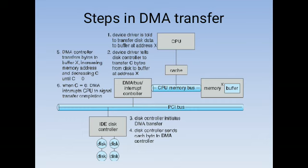Step 5: The DMA controller transfers bytes to buffer X, increasing the memory address and decreasing C until C equals 0. For example, if C starts at 10 bytes, it decreases to 9, 8, 7, and so on until C equals 0, meaning all data has been transferred. Step 6: When C equals 0, the DMA controller interrupts the CPU to signal that the transfer is complete.